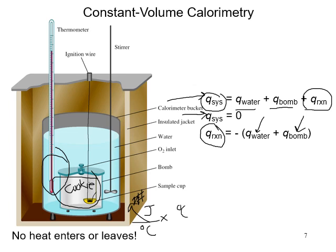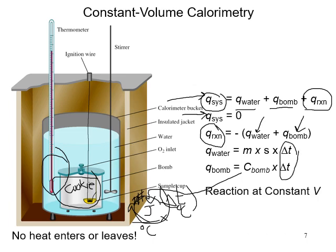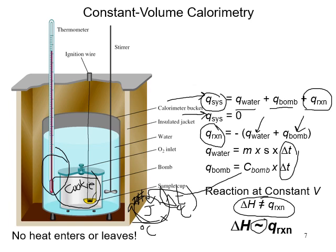To find q for the water, you need mass, specific heat, and ΔT. For the bomb calorimeter, you need its heat capacity and ΔT — both ΔTs are the same number. Since this is constant volume, q is approximately equal to ΔU rather than ΔH, but it's close enough for determining food calories.